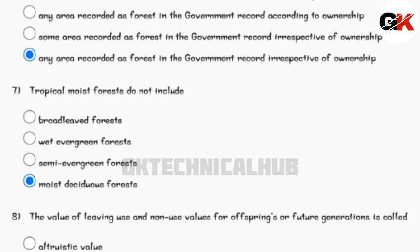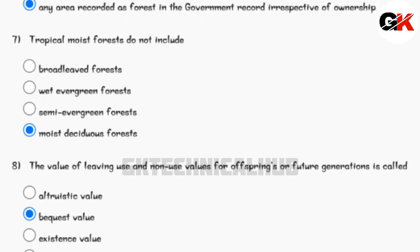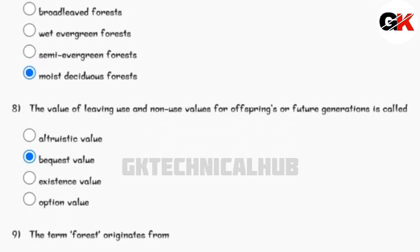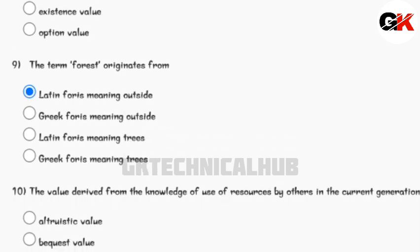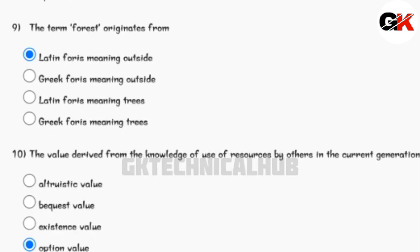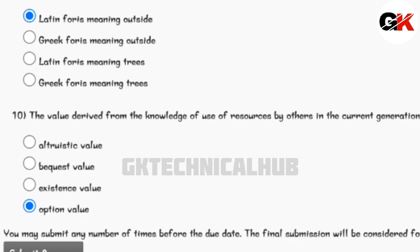For question number seven, tropical moist forests do not include moist deciduous forest. For question number eight, the value of living — use and non-use values for offspring or future generations — is called bequest value. The term 'forest' originates from the Latin word meaning 'outside.'